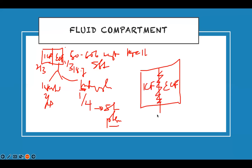You use isotonic fluid when someone has lost extracellular fluid — for example, bleeding, dehydration, burns, vomiting, or diarrhea. With isotonic fluid, there is no fluid shift between compartments, so everything stays stable. If someone is bleeding, give isotonic. If they're dehydrated, give isotonic. Vomiting, diarrhea, GI loss — give isotonic solution.